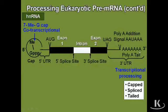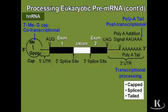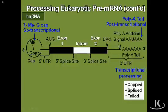Why do we waste energy adding a bunch of A's? Number one, it provides protection, just like the cap did. And number two, it helps the messenger RNA get out of the nucleus into the cytoplasm, where it will get translated into a protein. Those are the functions of the poly-A tail. Incidentally, the poly-A tail is added post-transcriptionally — only after transcription is complete — whereas the cap was added co-transcriptionally.